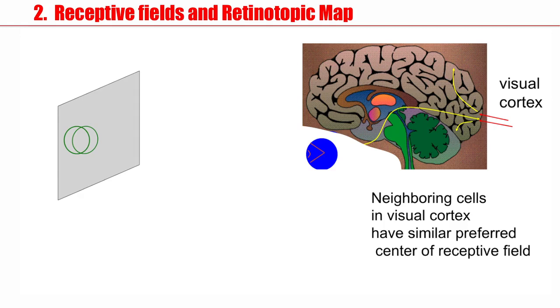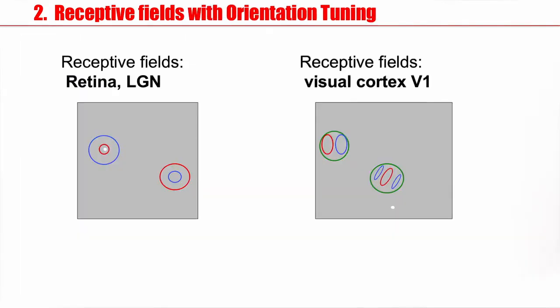You find that neighboring cells in visual cortex have very similar receptive fields, very similar zones where they are sensitive to visual input. Now, in visual cortex, the receptive fields are localized. You see here a localized zone mapped back to the screen. So whenever the light dot is in this area, you would get a response.